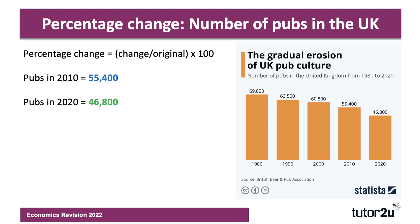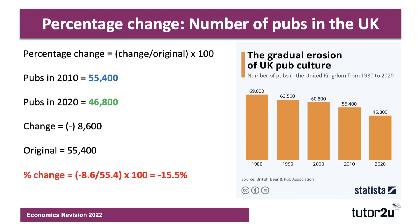The number of pubs in 2010 was 55,400. That had declined by 2020 to 46,800, so the change is minus 8,600. The original was 55,400, so the percentage change is minus 8,600 divided by 55,400, times 100, which is minus 15.5%. Remember to always include the minus sign. It's always good in an exam to show your workings and include the formula — you'll get credit even if you get the answer wrong.